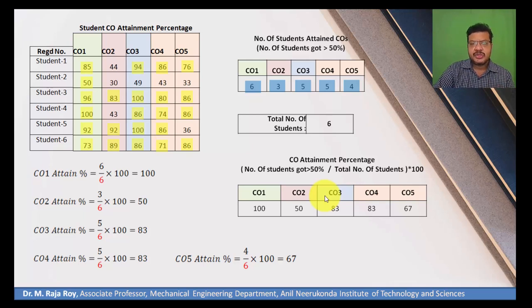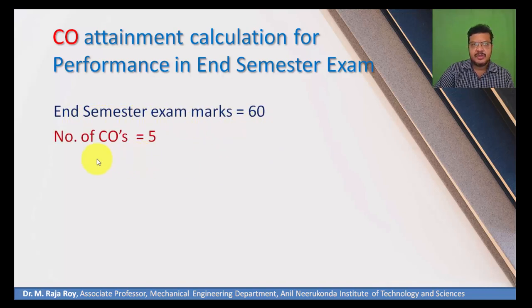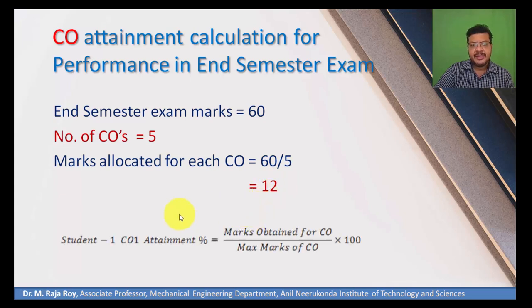Now 50% of the job is complete. The next step is to calculate CO attainment from the end-semester examination marks. The end-semester exam is for 60 marks with 5 COs, so marks allocated per CO are 60 ÷ 5 = 12. For each CO, the student's CO attainment percentage is calculated as: marks obtained for that CO divided by maximum marks (12) multiplied by 100.